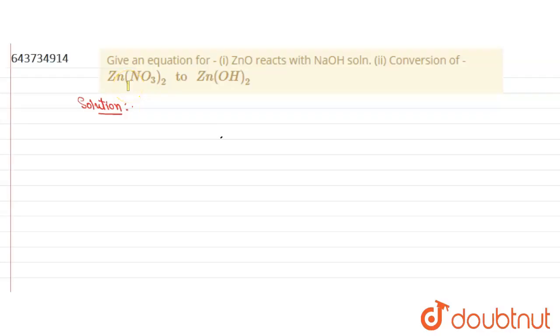Give an equation for: (i) ZnO reacts with NaOH solution, (ii) conversion of Zn(NO3)2 zinc nitrate to Zn(OH)2 zinc hydroxide. Let us see.